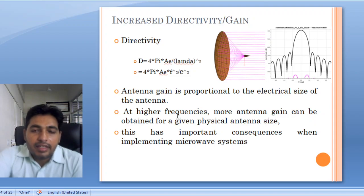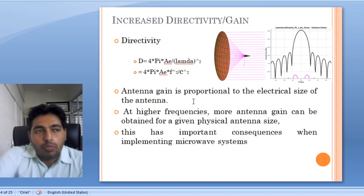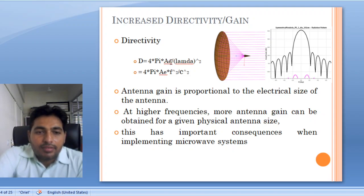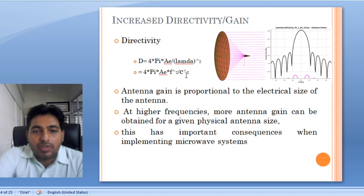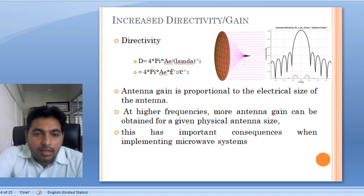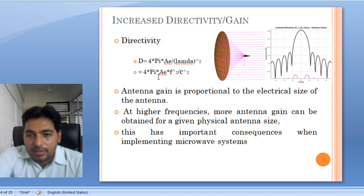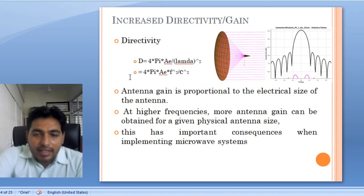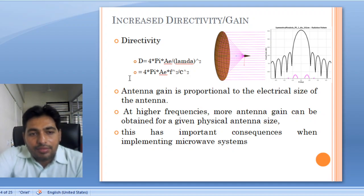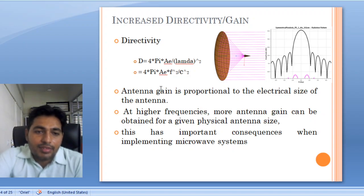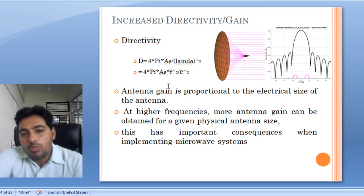The next advantage is increased directivity or increased gain. Directivity is given by D = 4πAe/λ², where Ae is the effective aperture. Since λ = c/f, directivity is directly proportional to the square of frequency. So larger the frequency, more will be the directivity. Directivity and gain are related: gain equals efficiency times directivity, and antenna gain is proportional to the electrical size of the antenna as well as the square of frequency.